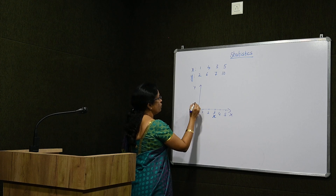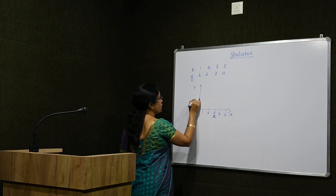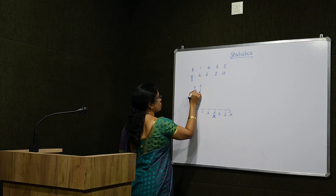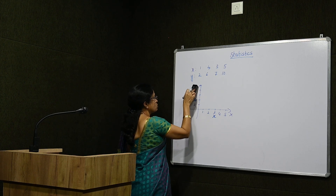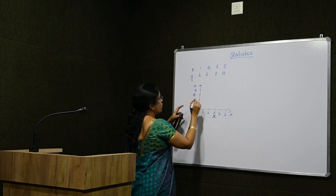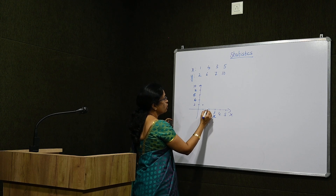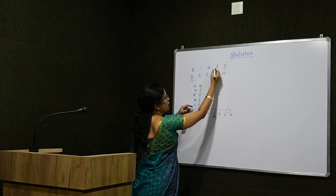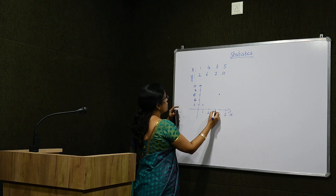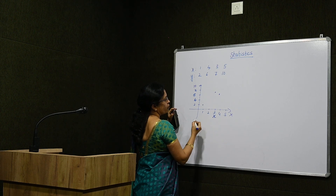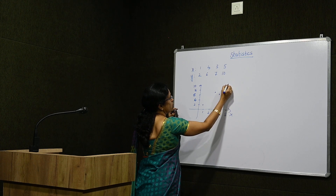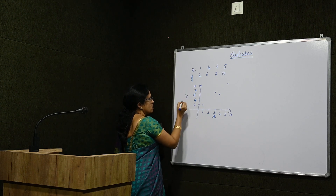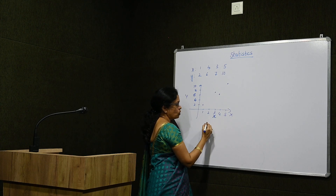We take some values for y and allocate the points: 1 comma 2, then 4 comma 6, 3 comma 7 is somewhere here, and 5 comma 10. These points are located in this plane. This graph, with points plotted along the x-axis and y-axis, is called a scatter diagram.